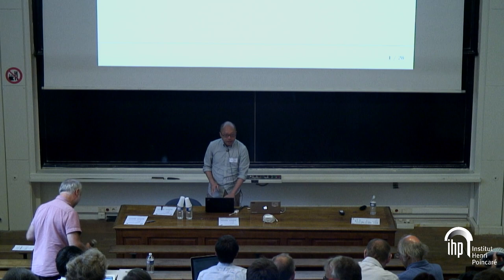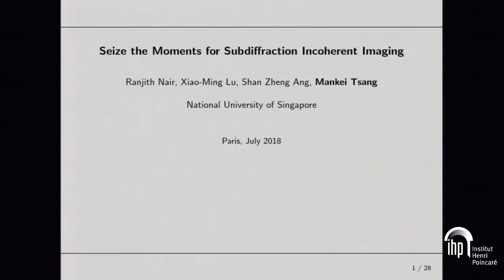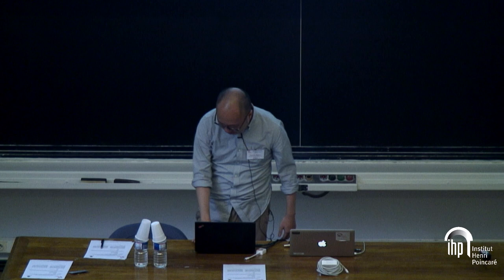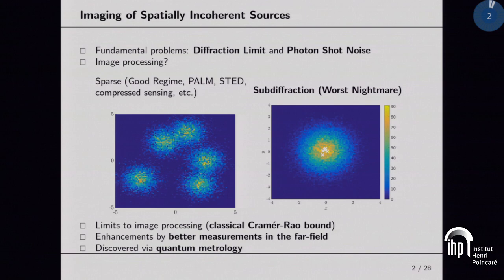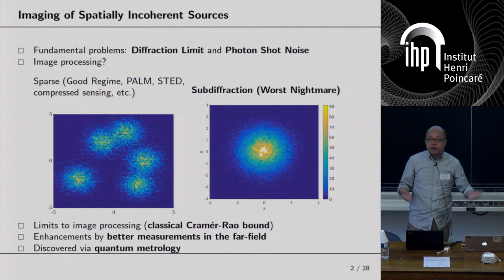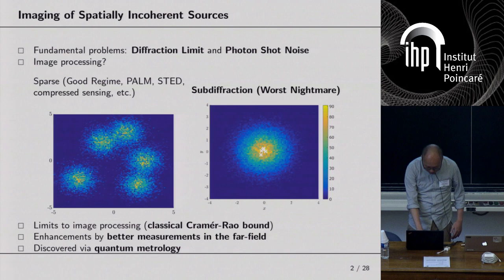Thank you so much for the invitation. I'm very happy to be here. Earlier in the conference, I think Ivan asked a very good question: what is the future of quantum trajectory theory? Well, here's my answer — I don't see a future, so I switched to something else. But this is something somewhat different from all the other talks. It's about incoherent imaging, imaging of spatially incoherent sources — for example, in astronomy you're looking at stars, or in fluorescence microscopy you're looking at fluorescent particles.